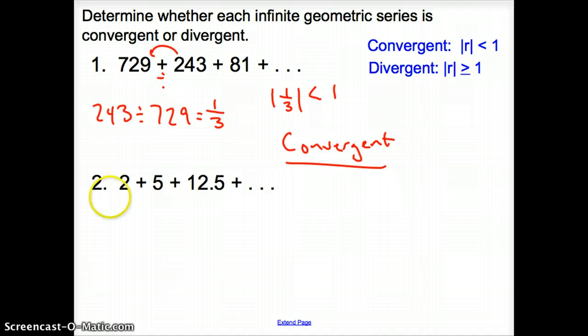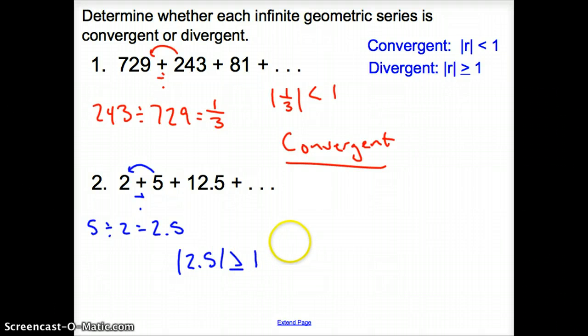Next, same thing here. We're given our series. How do we find our R? We go backwards and divide. So we go 5 divided by 2. That gives me 2.5. The absolute value of 2.5 is bigger than or equal to, it's really bigger than 1. And so that gives us a divergent series.